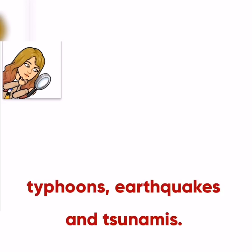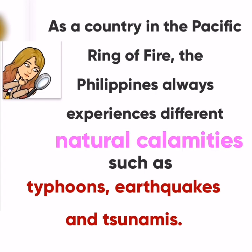Another example: 'As a country in the Pacific Ring of Fire, the Philippines always experiences different natural calamities such as typhoons, earthquakes, and tsunamis.' Natural calamities is the difficult word, while typhoons, earthquakes, and tsunamis are its examples.